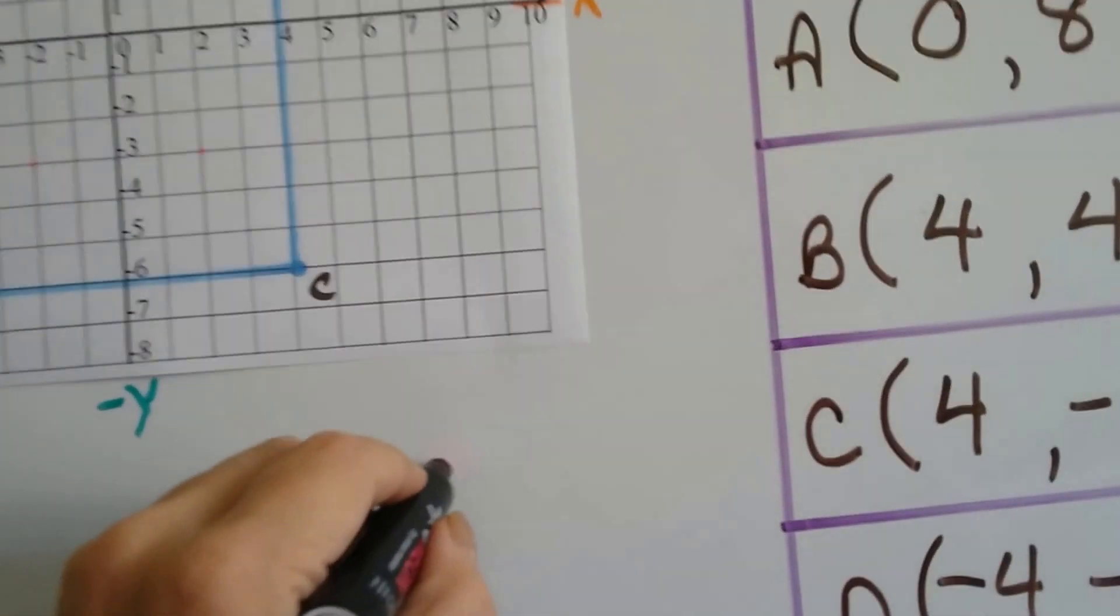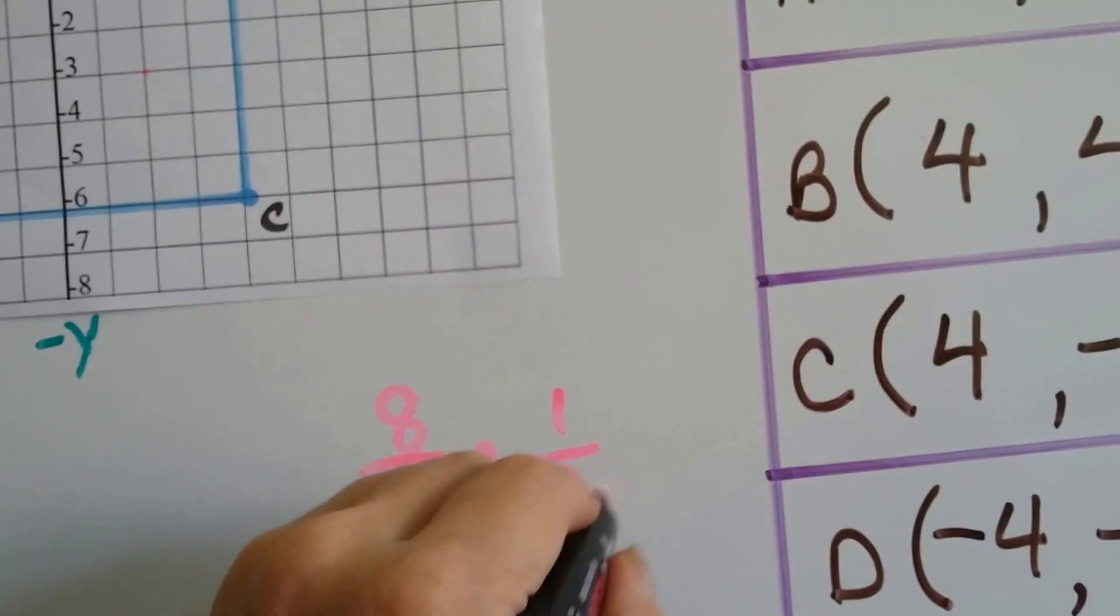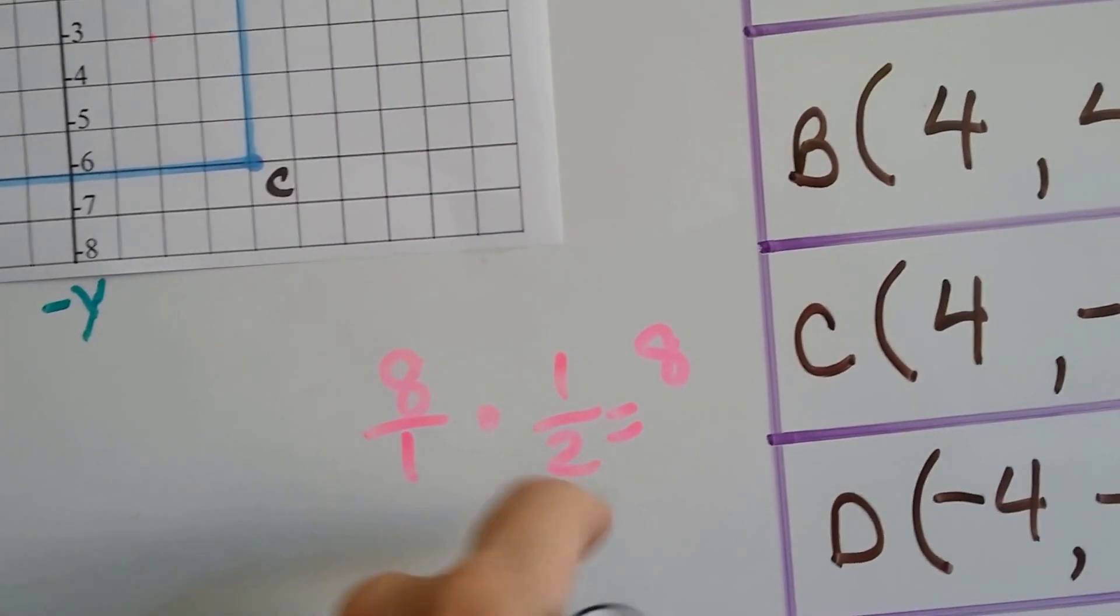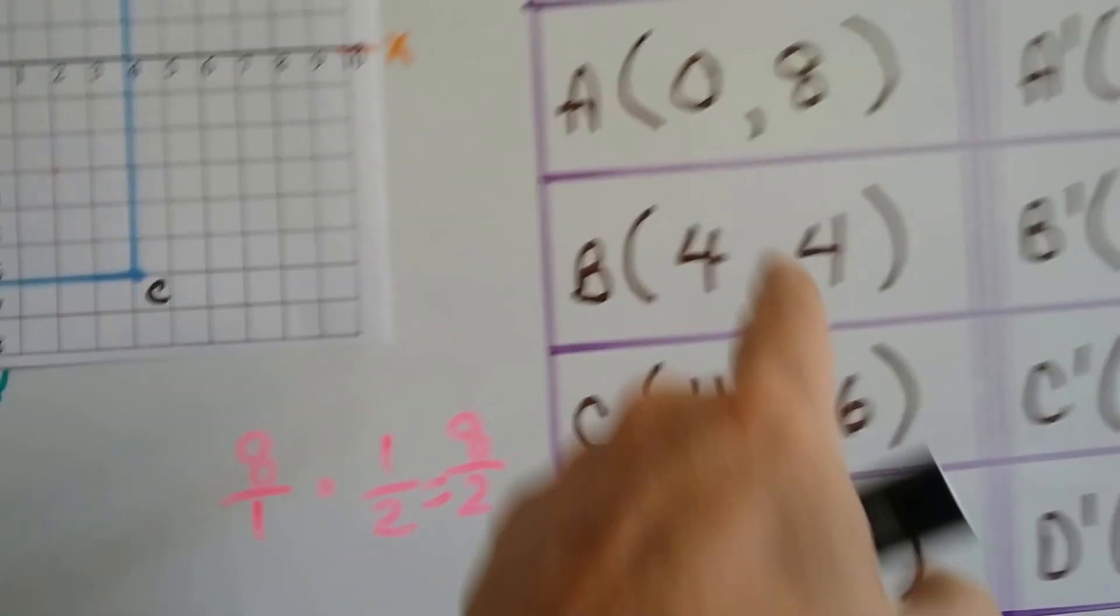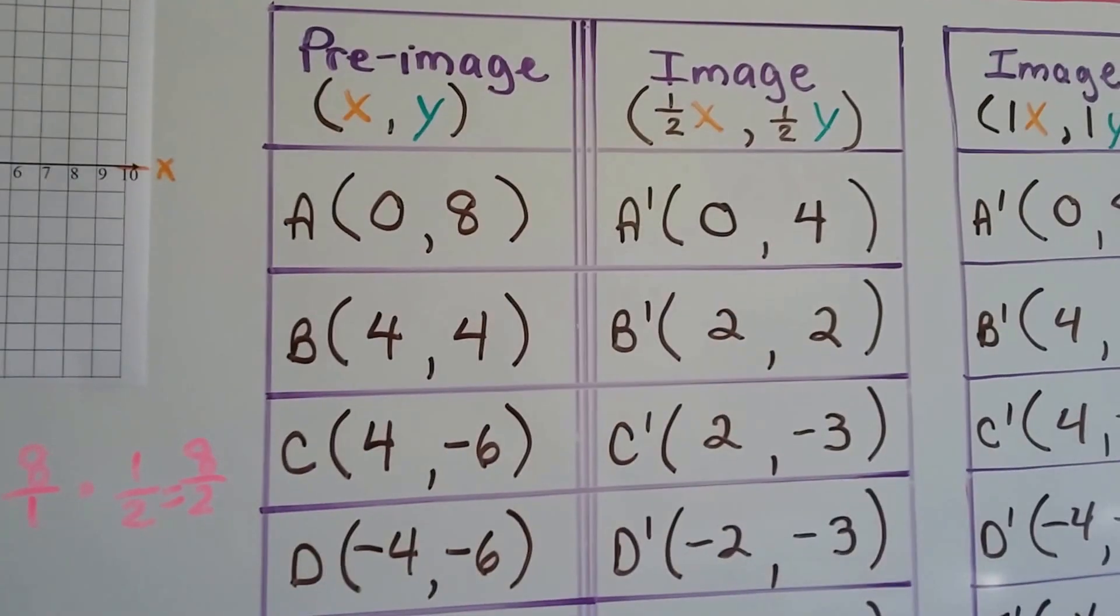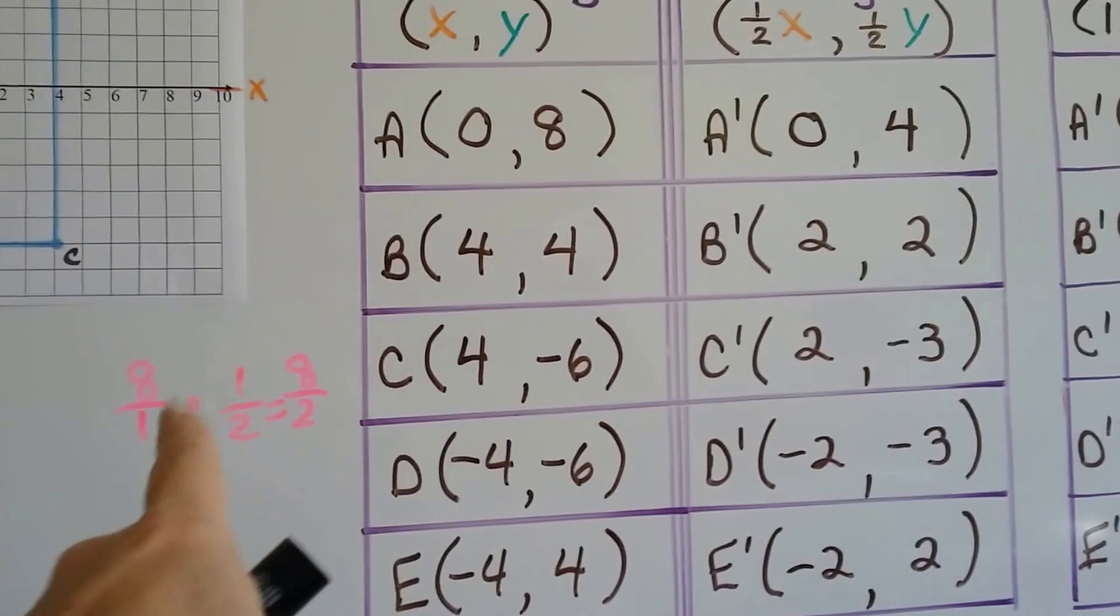Alright? So if you need to actually do this on paper, then do it. 8 times 1 is 8. 1 times 2 is 2. 8 over 2 is 4. See? So this 8 is going to be cut in half to a 4.